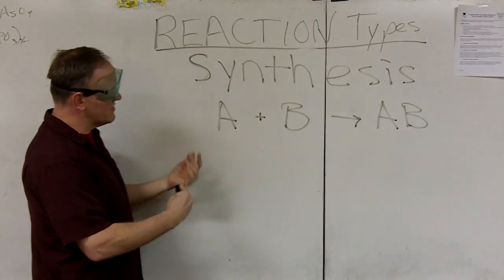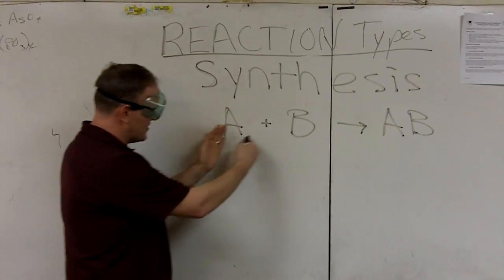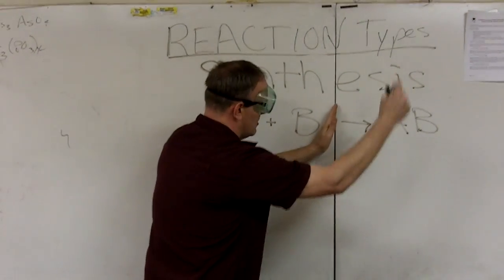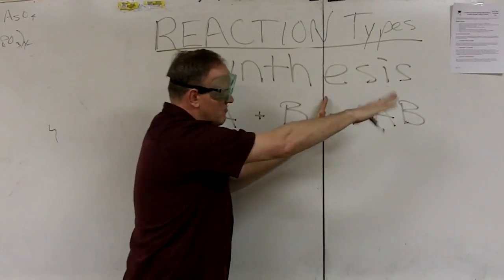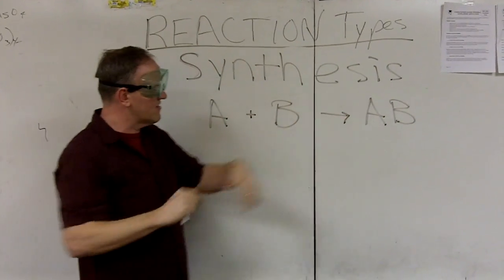These are real easy to identify. You always have something plus something, arrow, and then just one product. There's one thing on the right. There's no pluses on the right or anything like that.